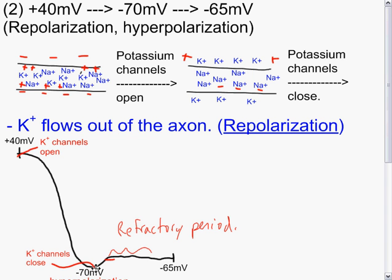And at the bottom of the trace, the potassium channels will close again. This will bring it from plus 40 millivolts down to minus 70 millivolts.